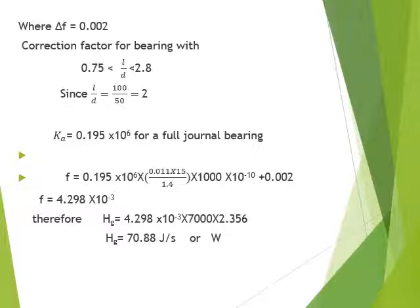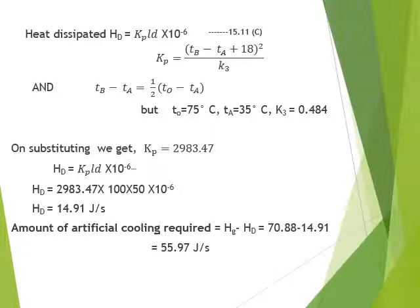Substituting into the heat generated equation, Hg = 70.88 J/s (watts). Moving to heat dissipated — required for the amount of cooling: the equation is HD = KP × L × D × 10⁻⁶ (equation 15.11 in the data handbook).